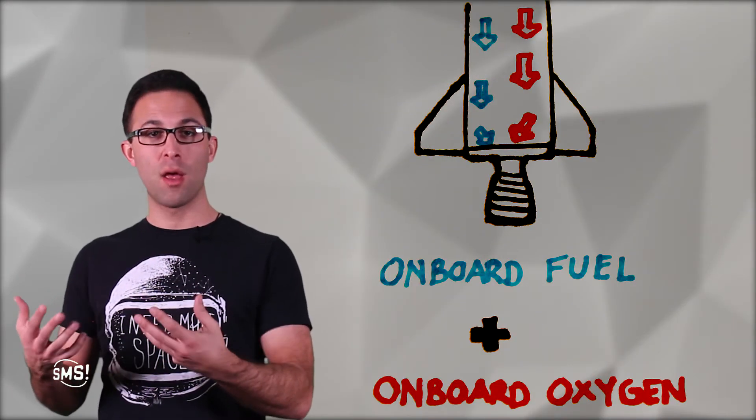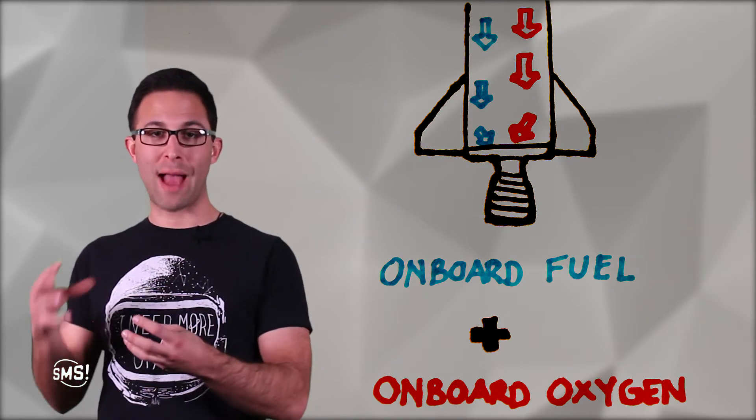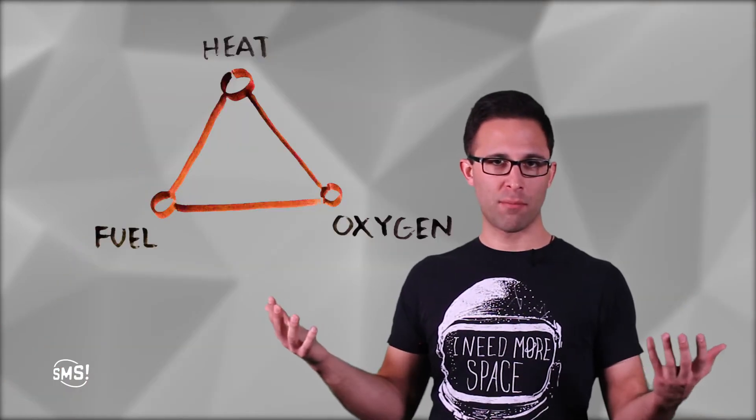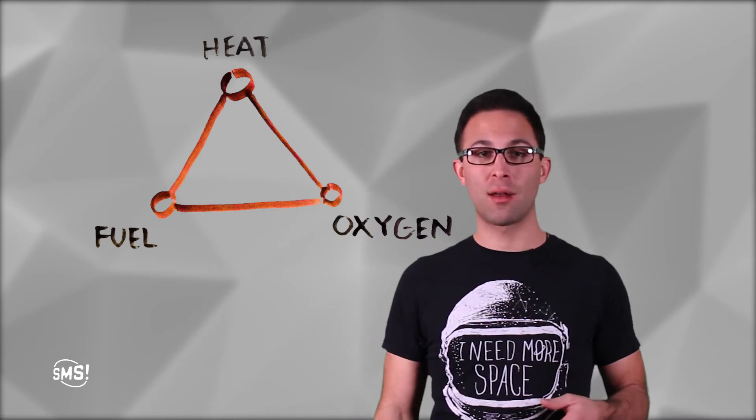Separately, we have rocket engines. Instead of pulling the oxygen from the air, they bring the oxidizer with them to react with the fuel, again, along with the heat. And you put those together, you have your fire, your controlled explosion, and you're sending your rocket in the right direction.